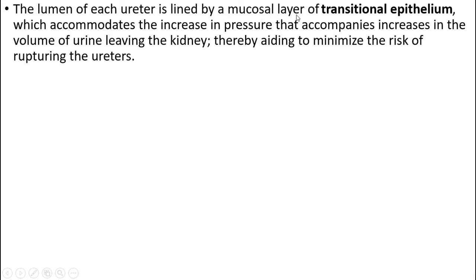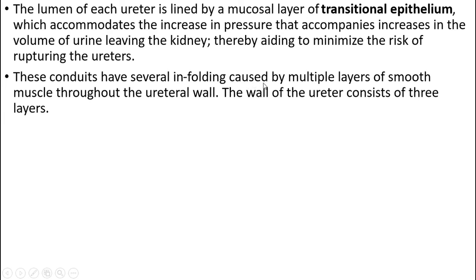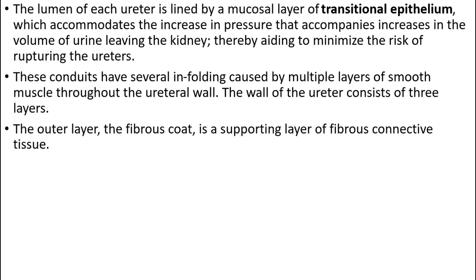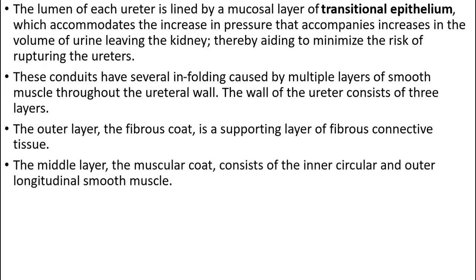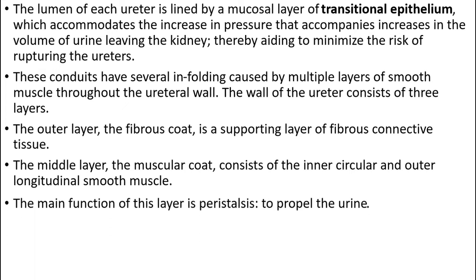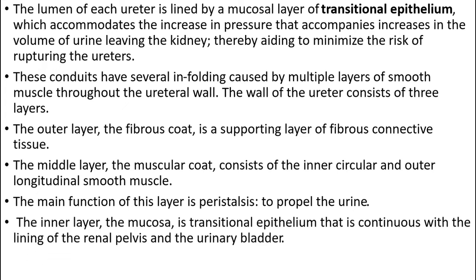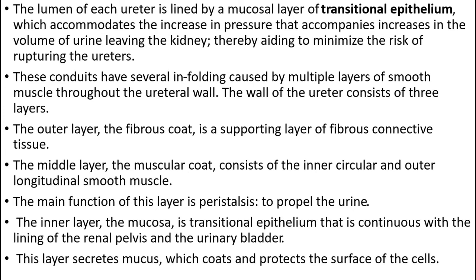The lumen of each ureter is lined by a mucosal layer of transitional epithelium, which accommodates an increase in pressure accompanying increased urine volume from the kidney, thereby helping to minimize rupturing of the ureters. The wall of the ureters consists of three layers: the outer fibrous layer (fibrous connective tissue), the middle muscular layer of inner circular and outer longitudinal smooth muscle whose main function is peristalsis to propel urine, and the inner mucosa of transitional epithelium continuous with the renal pelvis and urinary bladder lining.